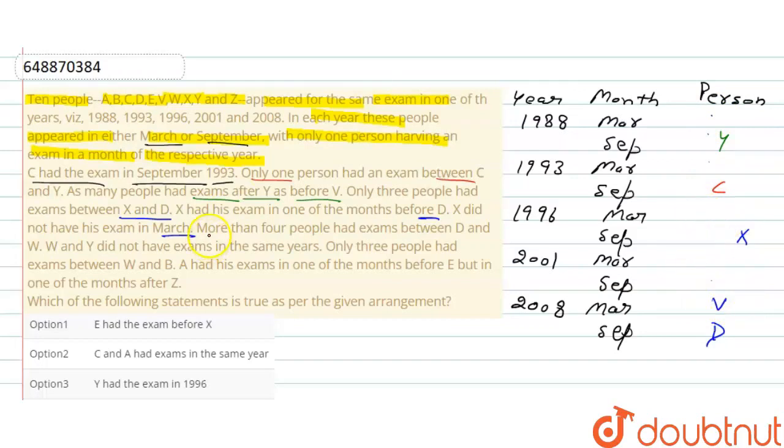Now next, more than 4 people had exam between D and W. D and W के between more than 4 person. यहां downward में possible है या upward. 1, 2, 3, 4 - four person gap, more than 4 यहां है 5 person gap. यहां है C and W, this means this is W. W and Y did not have exam in the same year. W and Y did not have exam in the same year. Only 3 people had exam between W and B, W and B के बीच 2 person gap यहां है 3 person gap 1, 2, 3. At least B की position यहां है clear.